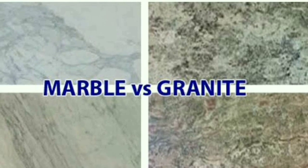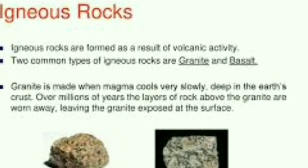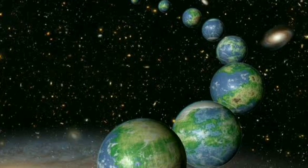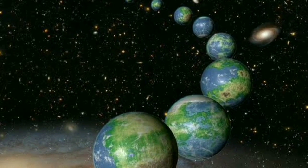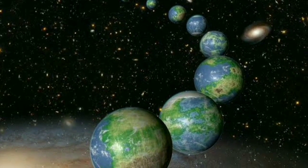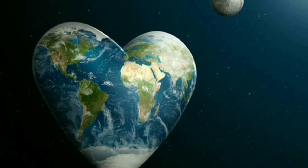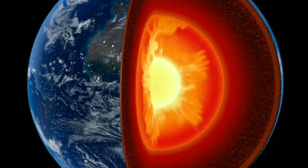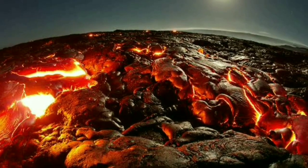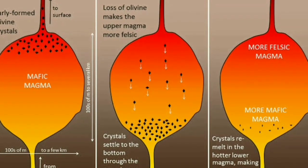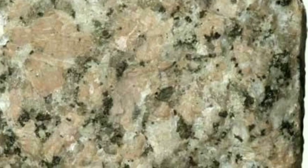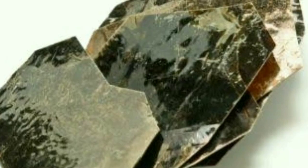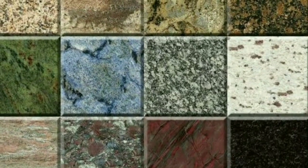Granite is a kind of igneous rock found on earth but nowhere else in the solar system. It is formed from magma in the earth's crust. The earth's crust crystallizes to form granite, which is composed of minerals including quartz, feldspar, mica, and others.